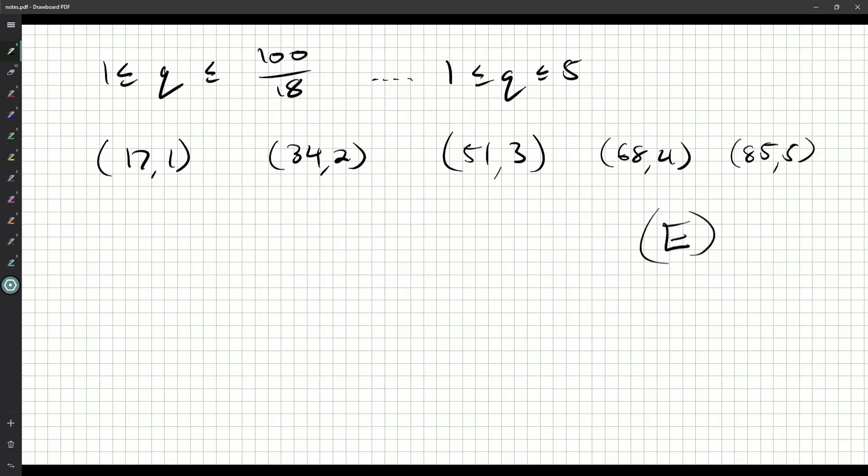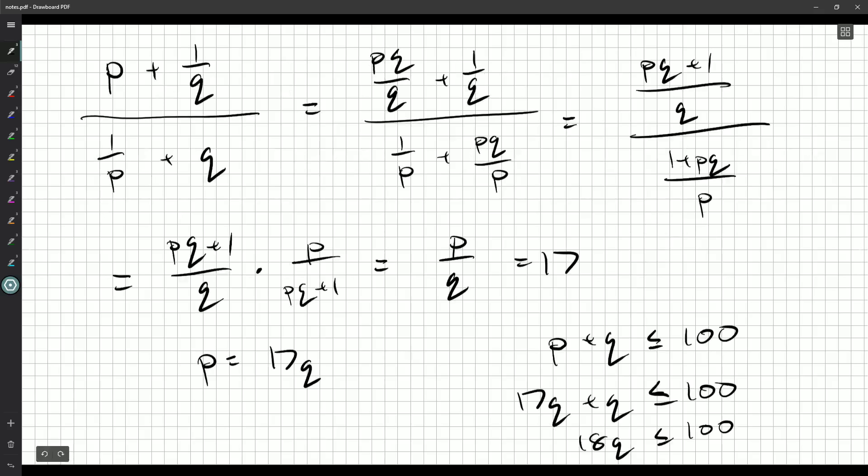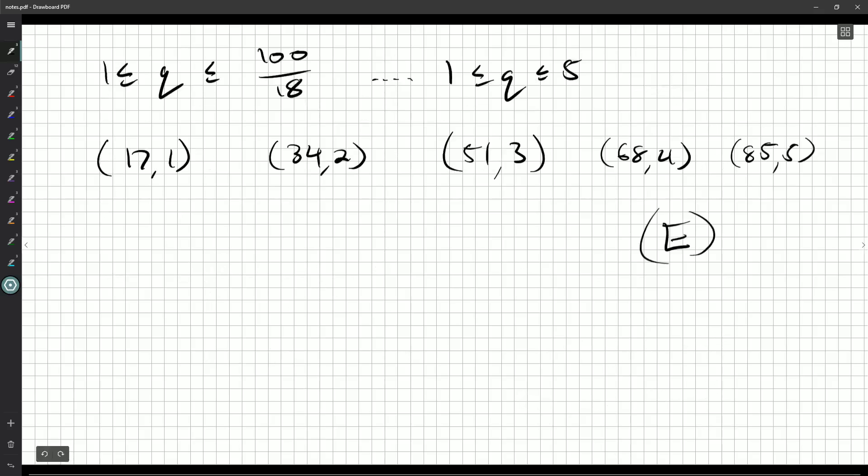And yeah, there's nothing really else to say. I mean, if you want to, just because we did that quite quickly, you could double check that your understanding is correct. You know, you could pick something at random, 51 and 3, and say, okay, 51 plus 1 3rd divided by 1 51st plus 3.